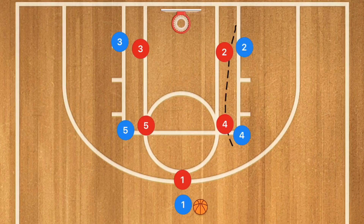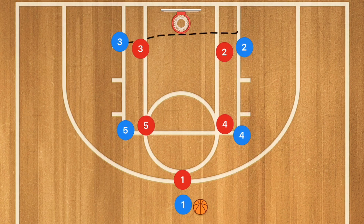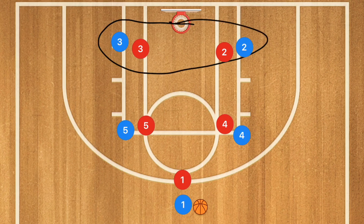Hey basketball coaches and players, today I'm going to give you some simple basketball offenses that you can run at the elementary school age level. Let's get down to the clipboard and check these out. This first offense is called the box offense because it makes a box. We start by having our smaller players in the low post and our bigger players in the high post.